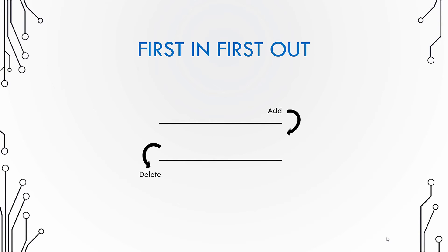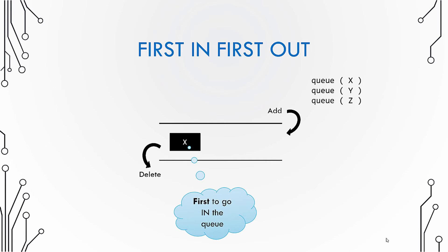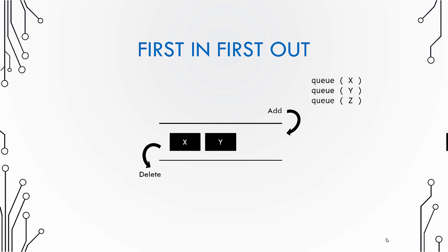In the queue, you add elements to the back and delete elements from the front. Let us queue three numbers: x, y, and z. When we queue x, it is the first number to go inside the queue. Then we add y and z.